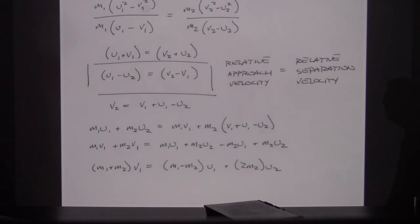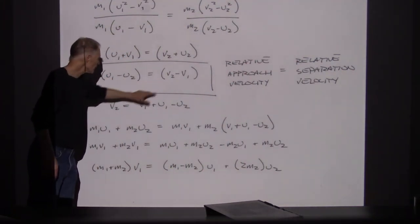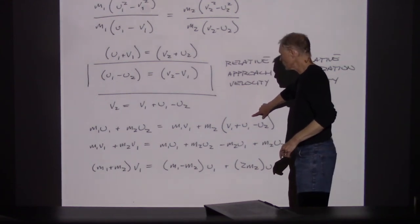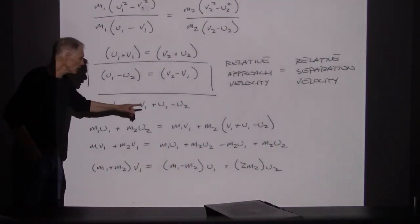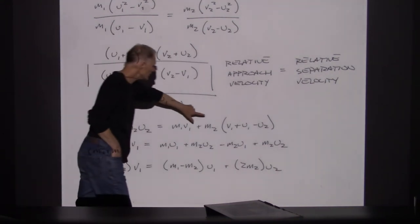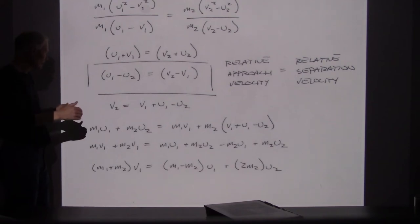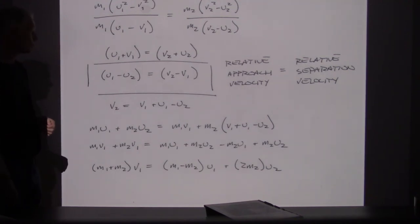We started by saying kinetic energy is conserved and showed that if kinetic energy truly is conserved, then the collisions will be elastic — they'll have the same speed of separation as speed of approach. Once we get to this point, we can start substituting: taking V2 written as V1 plus U1 minus U2 and substituting that in. After a couple more lines of algebra, we get M1 plus M2 times V1 equals M1 minus M2 times U1 plus 2M2 times U2.